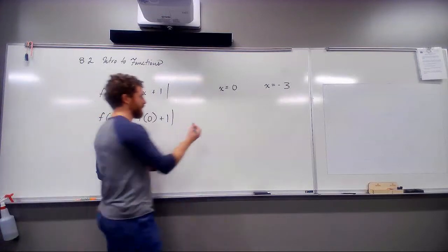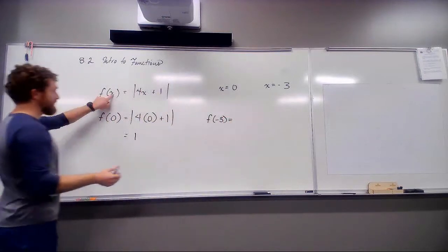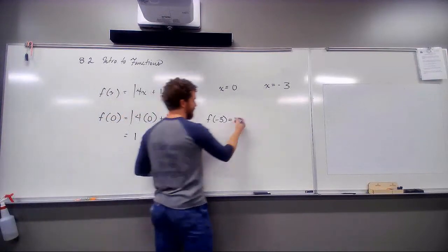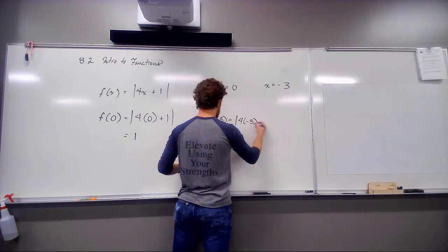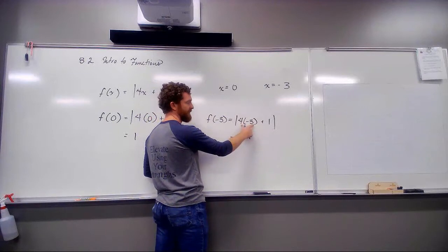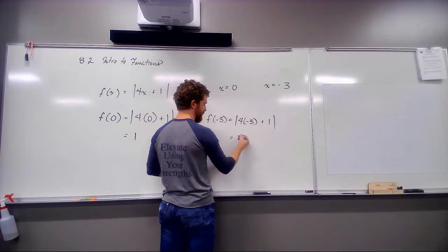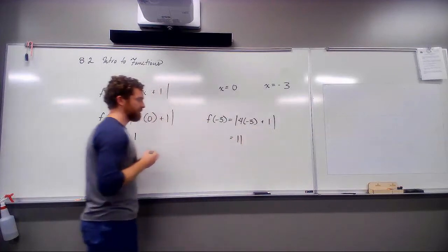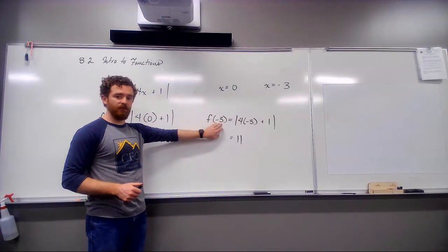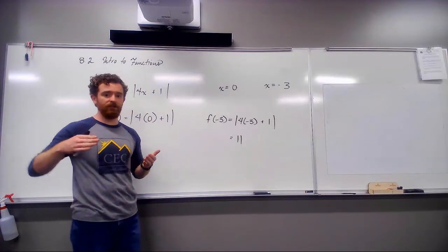I'm going to do the same thing for negative 3. x equals negative 3. I swap this x out for negative 3. Let me solve this. 4 times negative 3 is negative 12. Plus 1 is negative 11. The absolute value of negative 11 is positive 11. So, my function evaluated at the input negative 3 is positive 11. So, I have the ordered pair negative 3, 11.